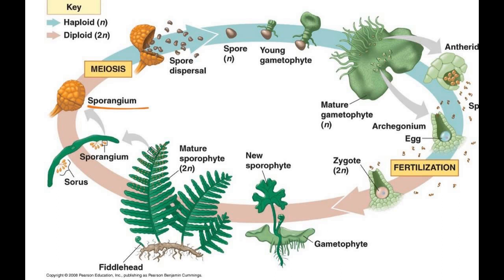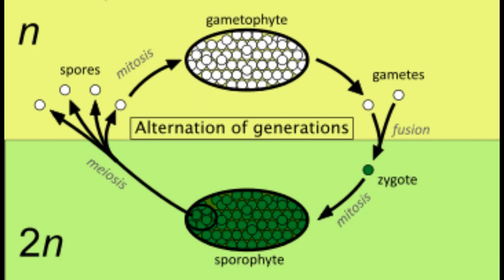Lots of plants go through a life cycle that goes between diploid and haploid alternations of generations. Alternation of generations is a life cycle that includes diploid and haploid multicellular life stages. In these two phases of generations, they are often distinct.